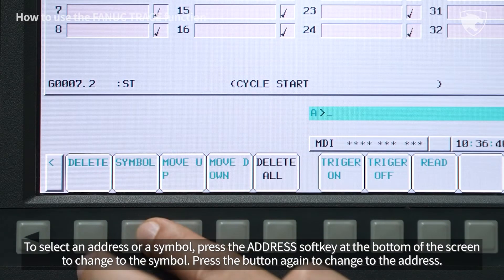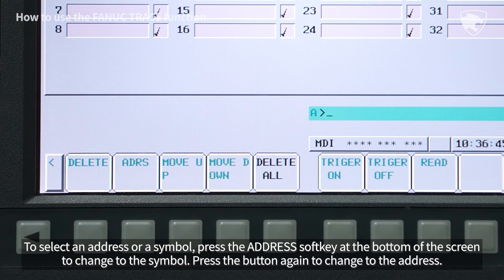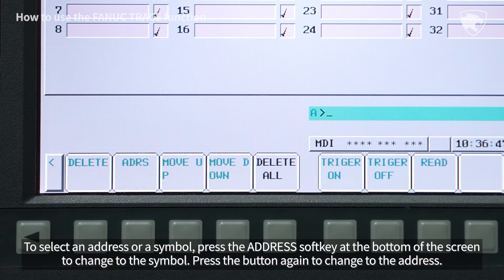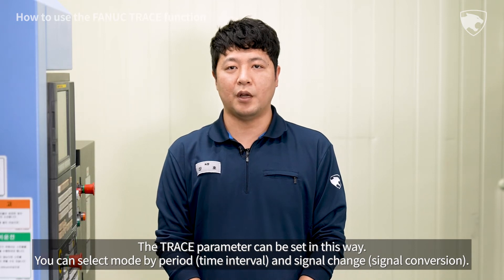To select an address or symbol press the address soft key at the bottom of the screen to change to the symbol. Press the button again to change to the address. The trace parameter can be set in this way.